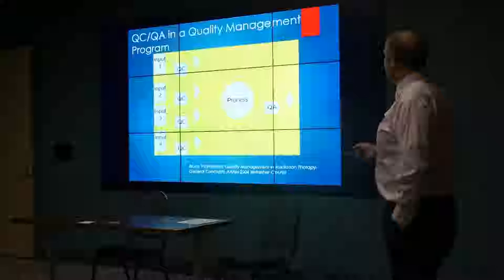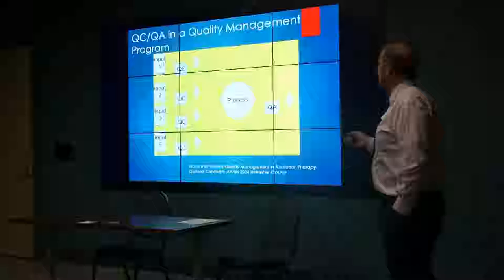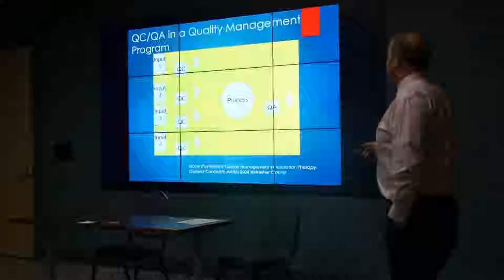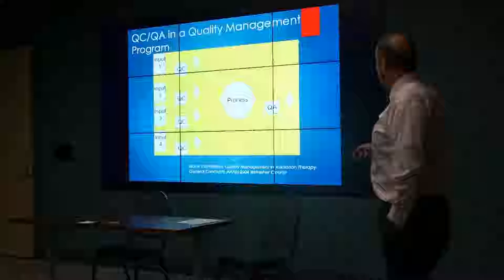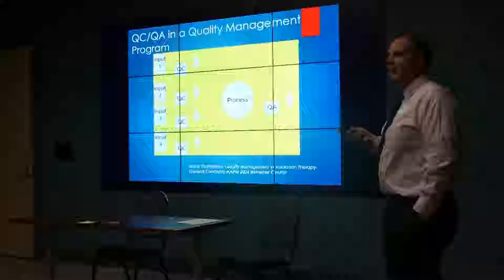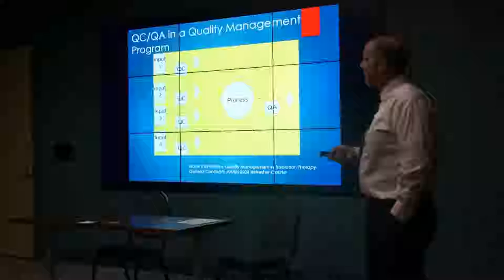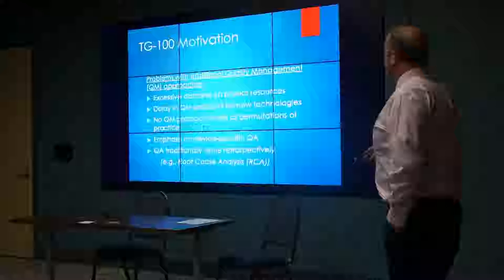In a diagram, a process has multiple inputs. A quality control or QC procedure might be established to make sure a particular input is done correctly. You might have multiple QC procedures, whereas after the process is done and the output is there, you can do a quality assurance evaluation to make sure everything looks okay. The advantage of quality assurance is that you only have one test to make at the end. The disadvantage is if it goes wrong, you have to go back to find where the error lies.